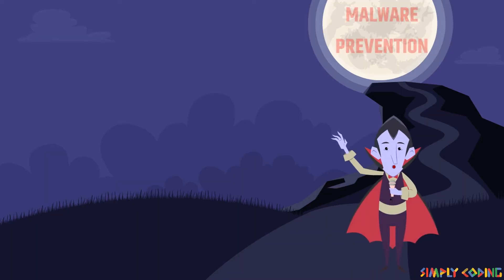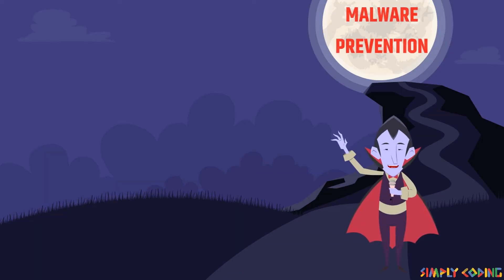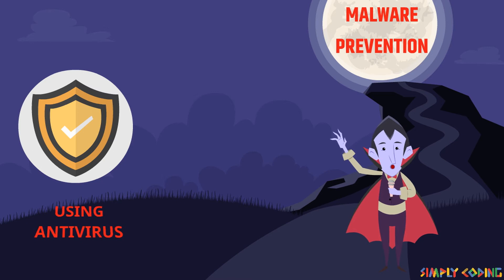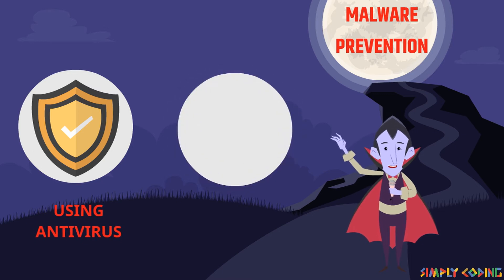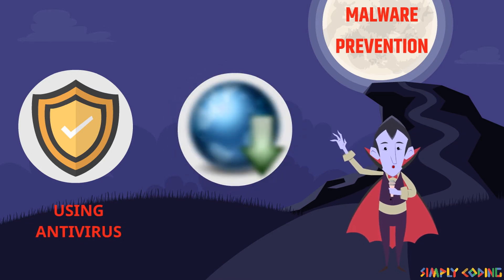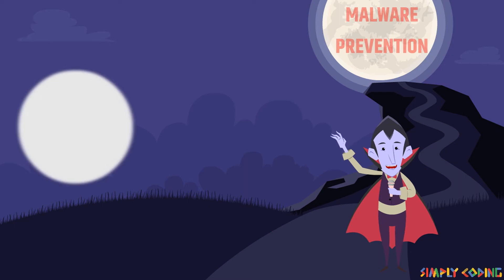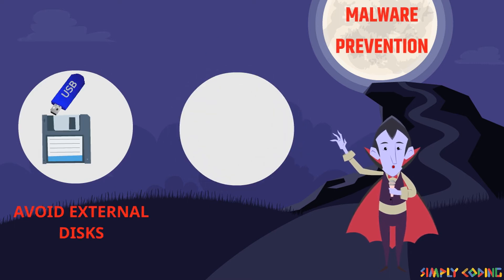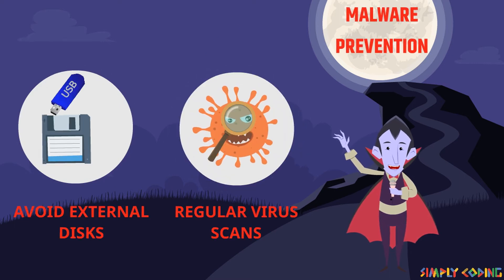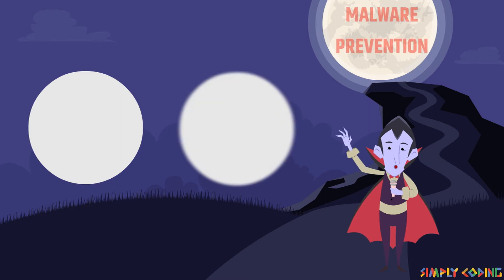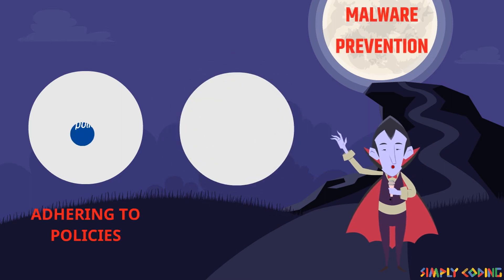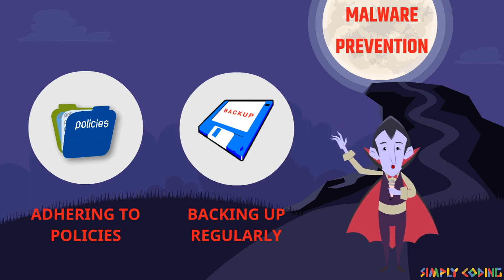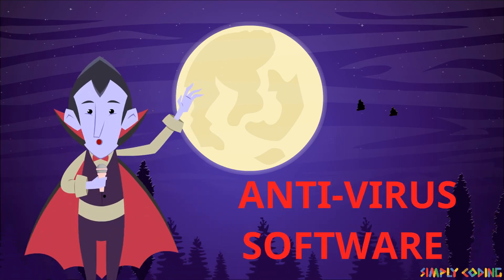To protect from malware, we should use tools like antivirus software. We should avoid downloading or clicking unknown links, and avoid using media such as floppy disks or USB drives without proper scans. We should also adhere to policies and practices including regular patching and backing up data often.